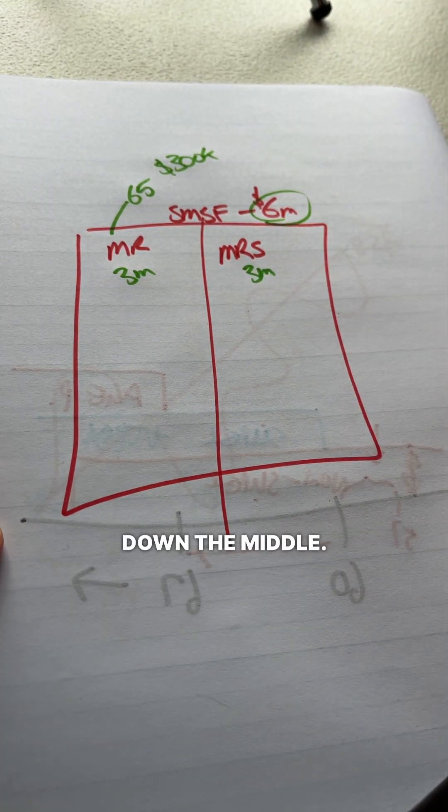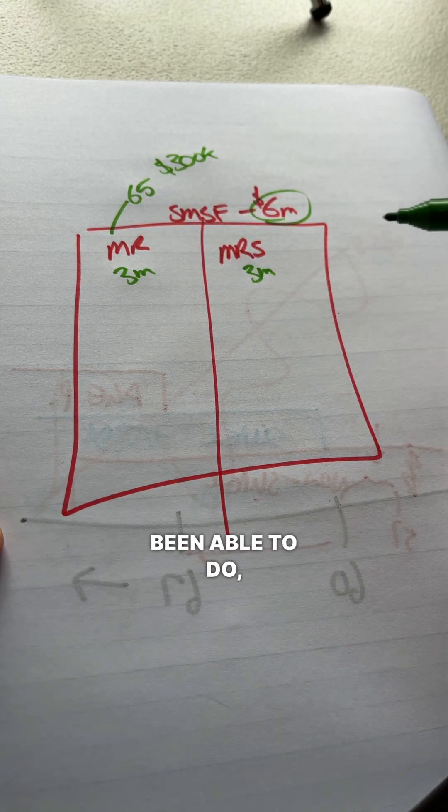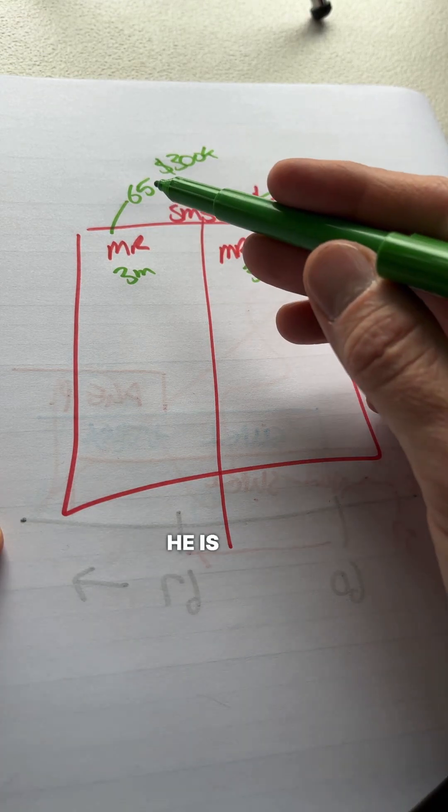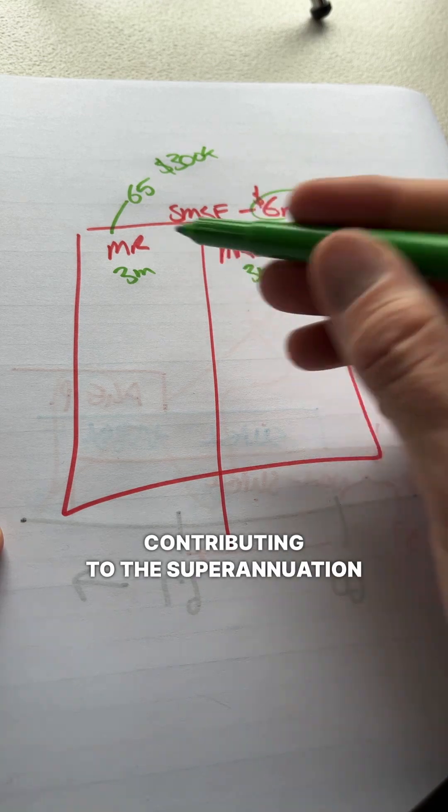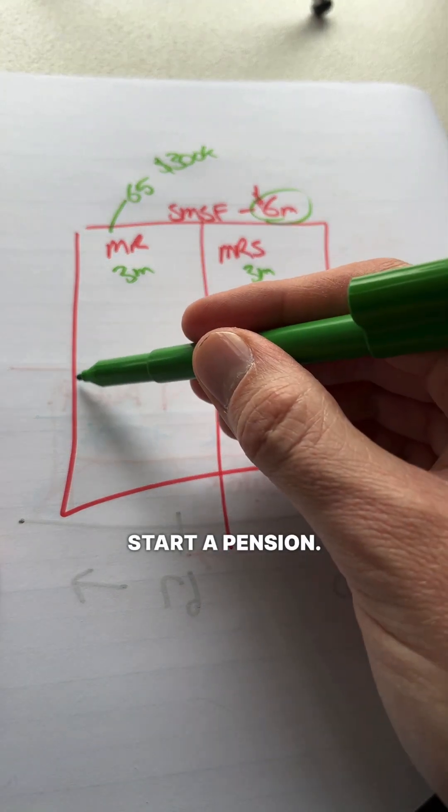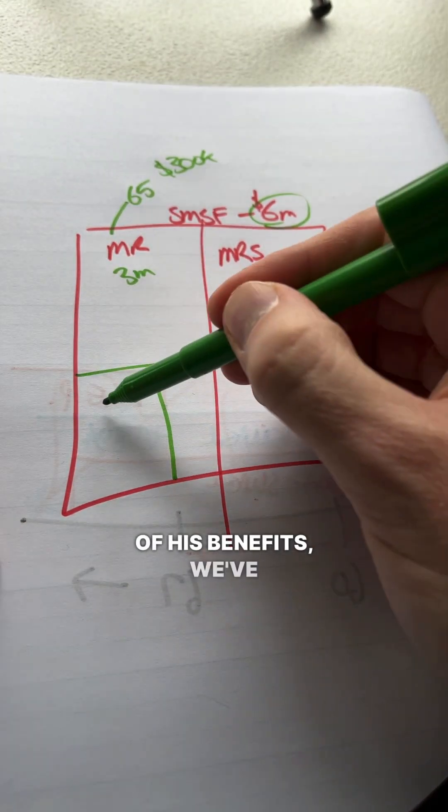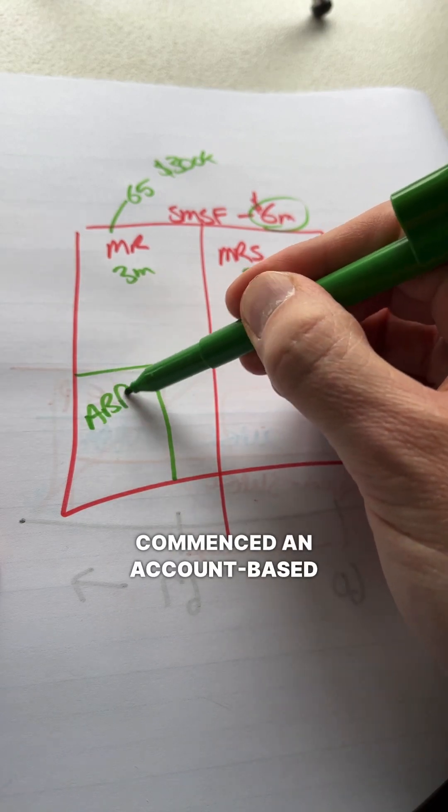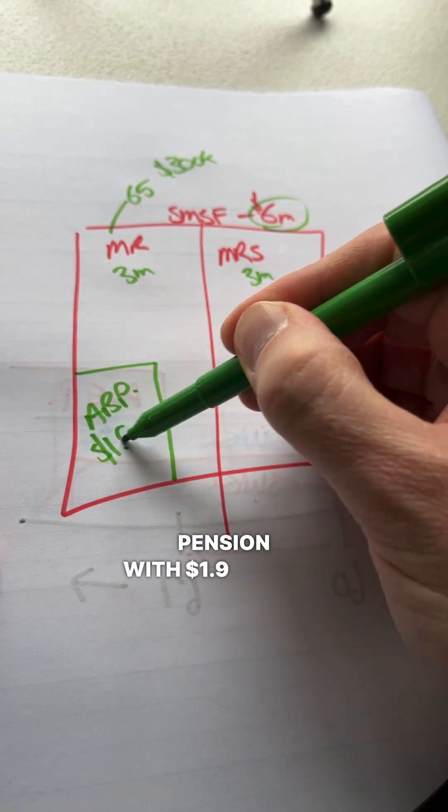So what we've done here is this balance is split roughly 3 million and 3 million, so it's almost split evenly down the middle. What the husband's been able to do, he's now 65, even though he is still working and contributing to the superannuation fund, is elect to start a pension. So with part of his benefits, we've commenced an account-based pension with $1.9 million.